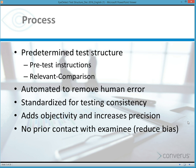In terms of contact between the examinee and the person administering the test, there's very little contact. The test is predetermined — the structure, test types, and test questions have been predetermined. This whole process has been automated. It removes human error, is more standardized, and delivered the same way to every examinee in the same fashion, in the same structure, in the same process. By doing that, you add objectivity, reduce subjectivity, and increase precision and accuracy.